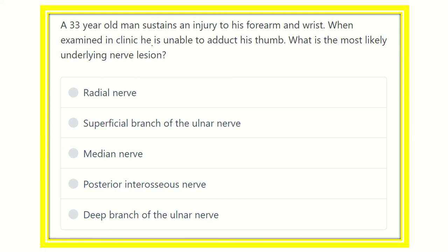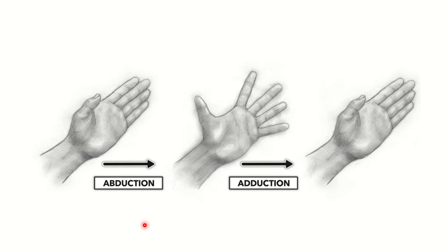From the question, it is clear that the patient is unable to adduct his thumb, so adduction of the thumb is lost. We have to find out the nerve lesion. First, we find the muscle which causes adduction of the thumb, then find the nerve which supplies that muscle. The options are: radial nerve, superficial branch of the ulnar nerve, median nerve, posterior interosseous nerve, and deep branch of the ulnar nerve.